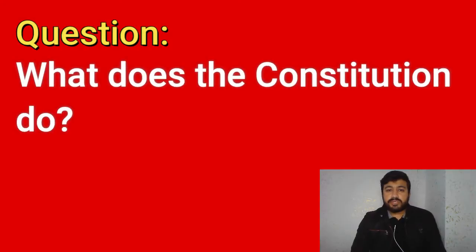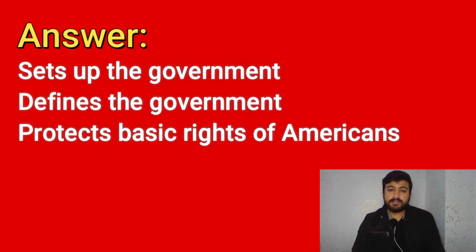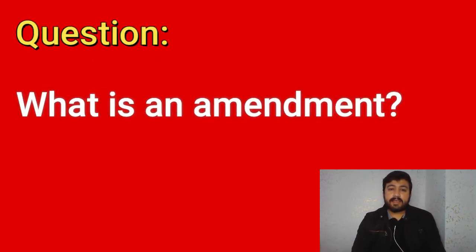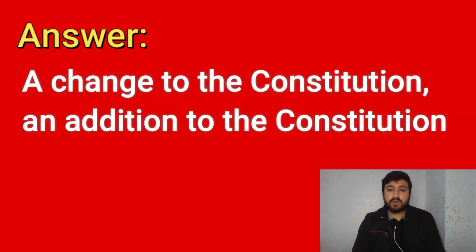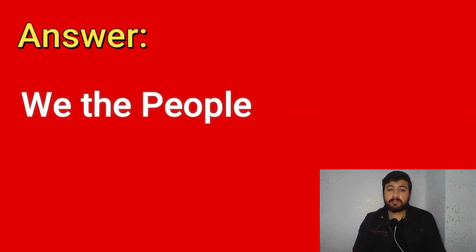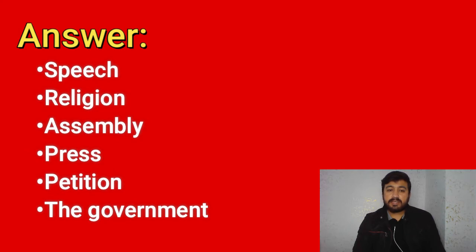What does the Constitution do? It sets up the government, defines the government, and protects the basic rights of Americans. What is the supreme law of the land? The Constitution. What is an amendment? A change to the Constitution, an addition to the Constitution. The idea of self-government is in the first three words of the Constitution. What are these words? We the People.